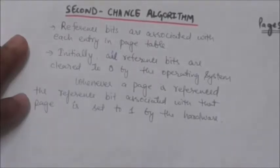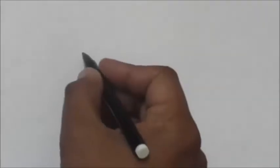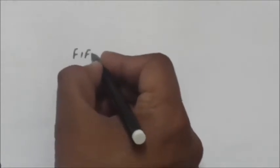Now see how this algorithm works. In the second chance page replacement algorithm, whenever a page is to be replaced from main memory, pages are checked in FIFO order (first in, first out order).